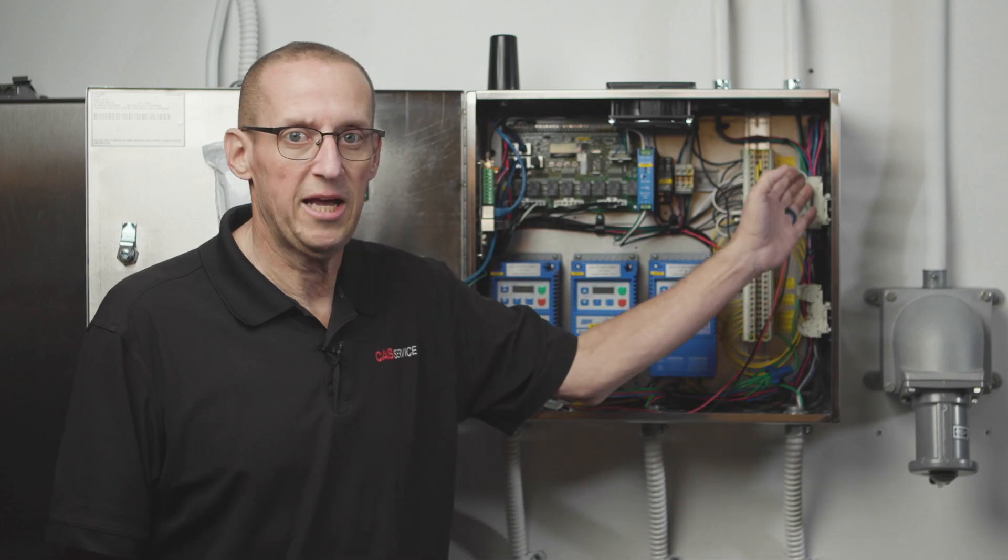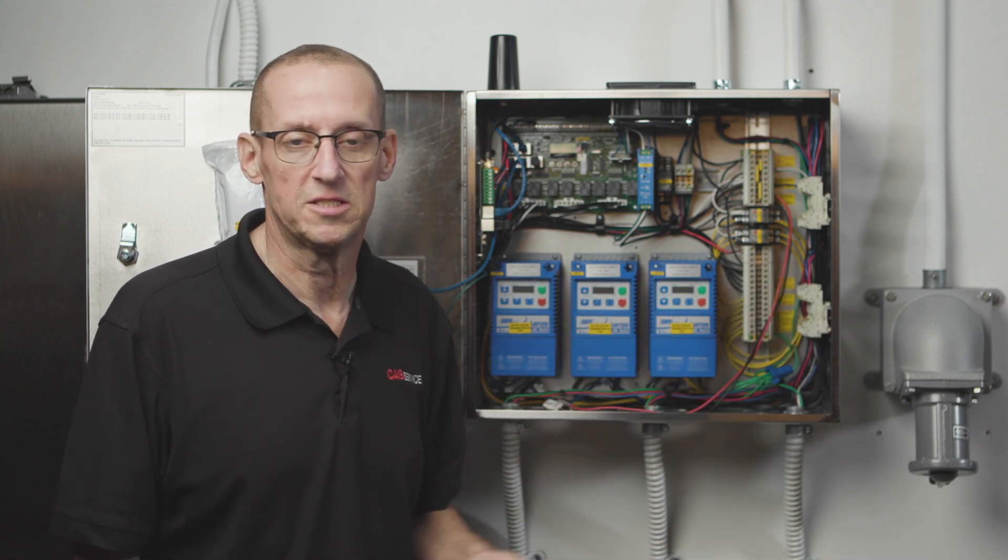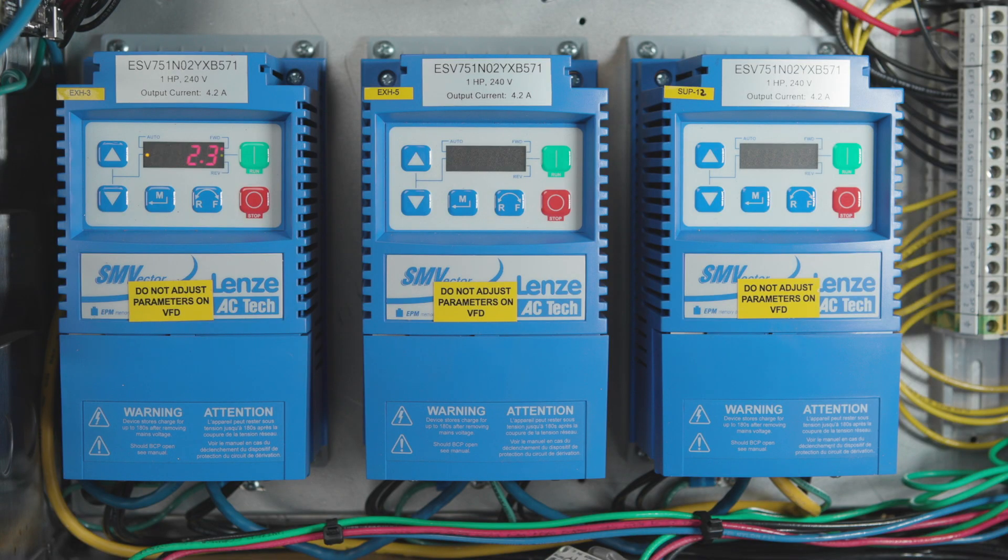If you mix up line and load here, when you turn on the breaker, it's going to short the VFD instantly. It's going to have to be replaced. With these quick disconnects unplugged, when you turn on the breaker, one of two things is going to happen.